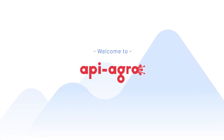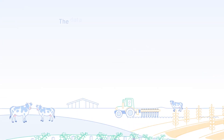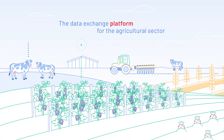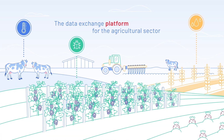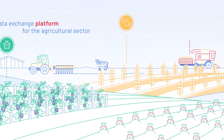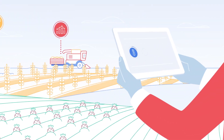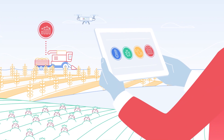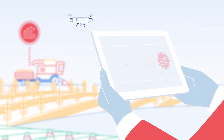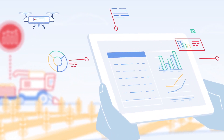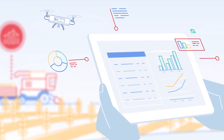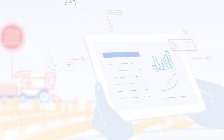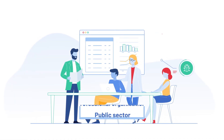Welcome to API Agro, the data exchange platform for the agricultural sector. As part of your professional activities, you generate and accumulate information every working day. This massive data is a precious resource for you and for all actors in the agricultural sector.